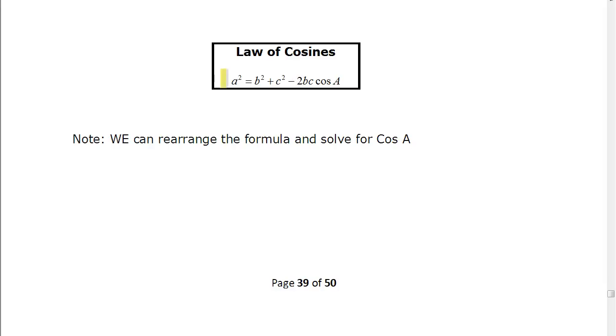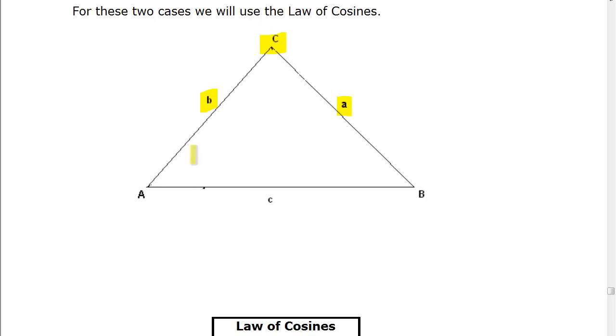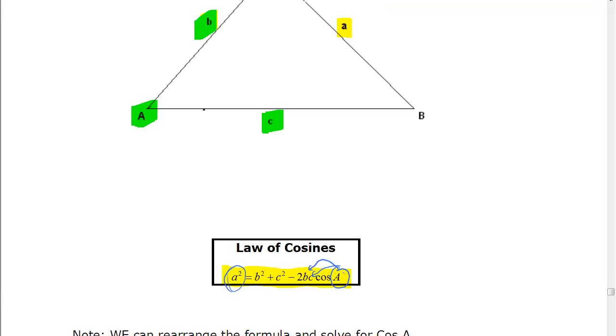But then we have this term that we must subtract. That's 2 times B times C, so the same two sides as we have here, multiplied by the cosine of A. A would be the included angle of B and C. What I mean by included angle, if we look back at our triangle, A is the included angle between side B and side C. So in our formula, angle A has to be included between B and C, or A comes with the corresponding side over here.